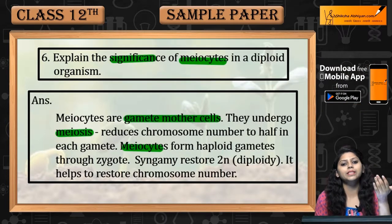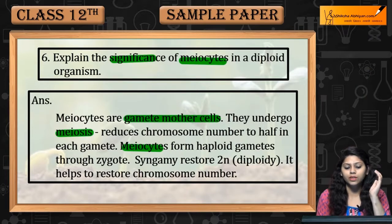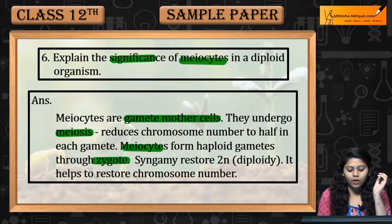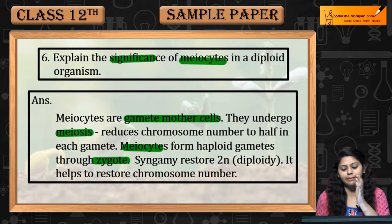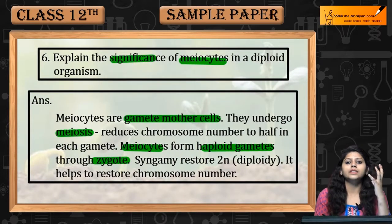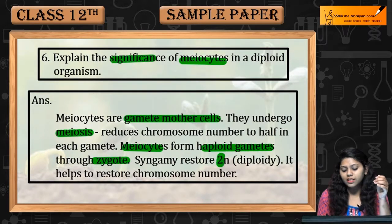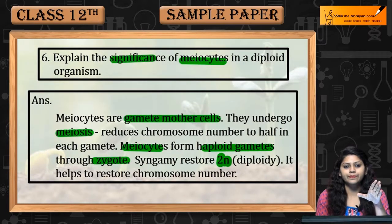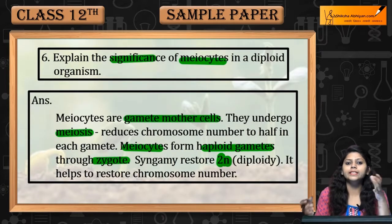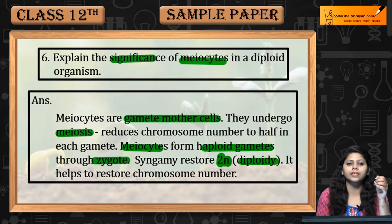Meiocytes haploid gametes बनाते हैं. Haploid N number हुआ. अब syngamy जब होगी, fusion जब होगी, उससे diploidy restore हो जाती है. Gametes बनते हैं haploid, syngamy होती है and diploids form होते हैं.